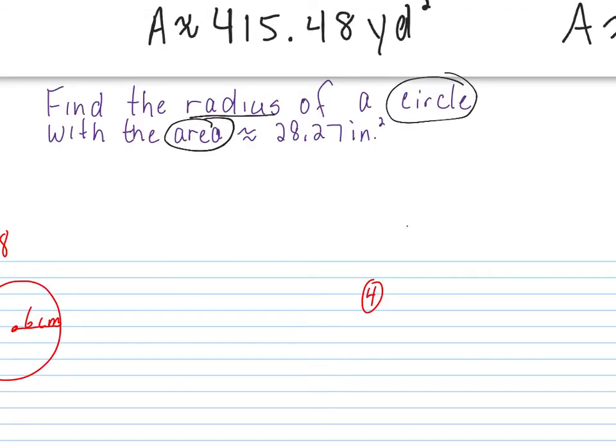So the formula is area equals pi r squared. What is unknown to us? What's unknown? What's unknown? The radius? So we're trying to find this right here. What do we know? The area.